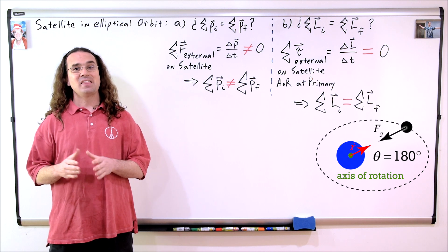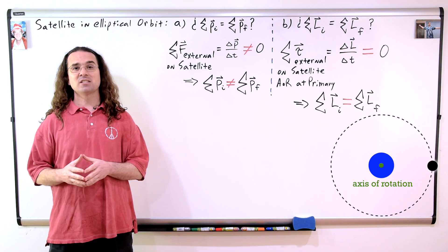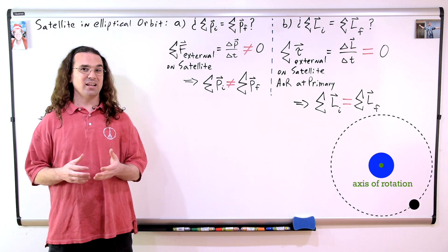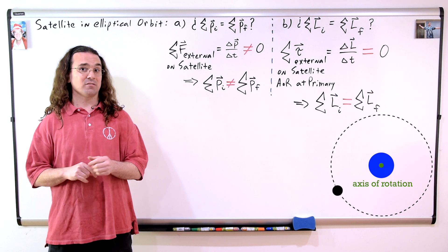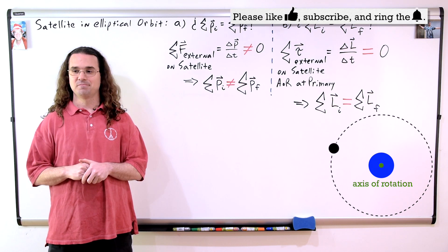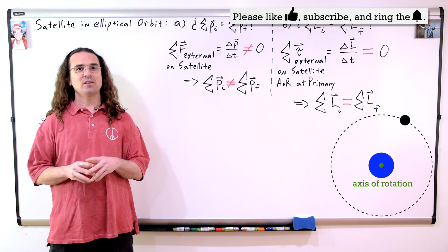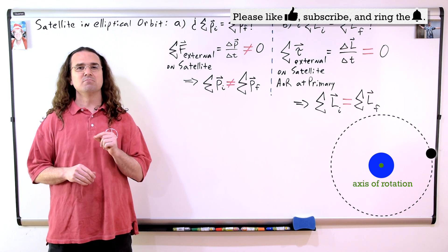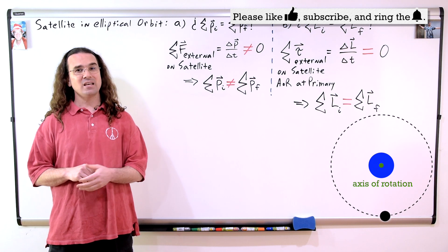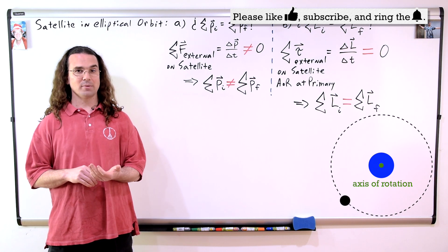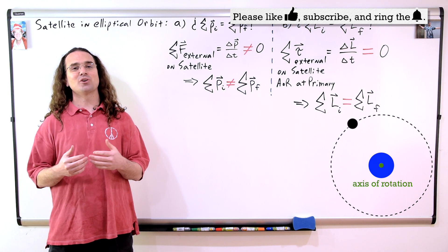I will point out that if we assume the satellite's orbit is circular, linear momentum is still not conserved and angular momentum about the center of mass of the primary is still conserved. I simply identified the orbit as elliptical because most satellites have nearly elliptical orbits and very few satellites have nearly circular orbits. Thank you very much for learning with me today. I enjoyed learning with you.